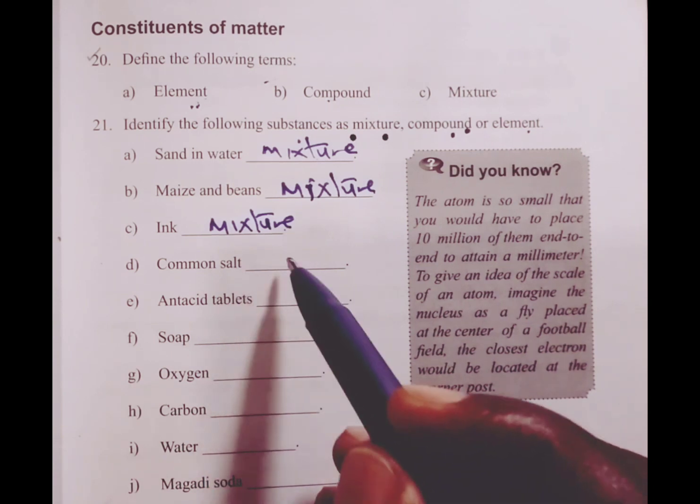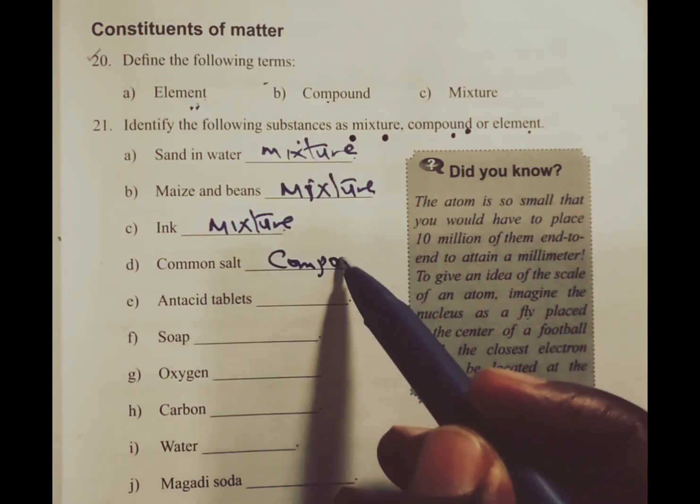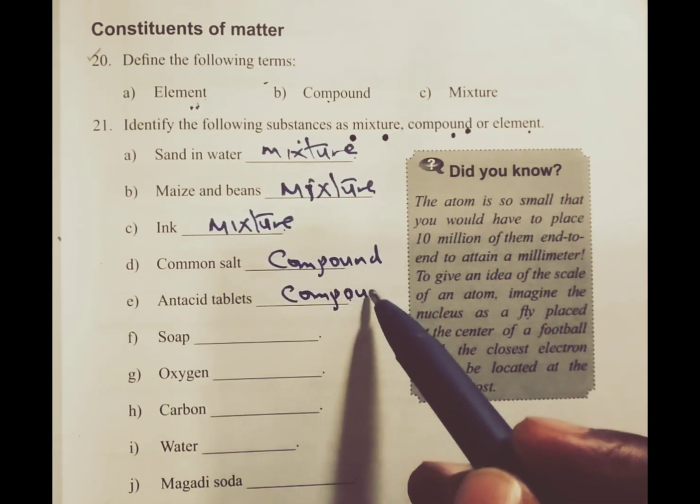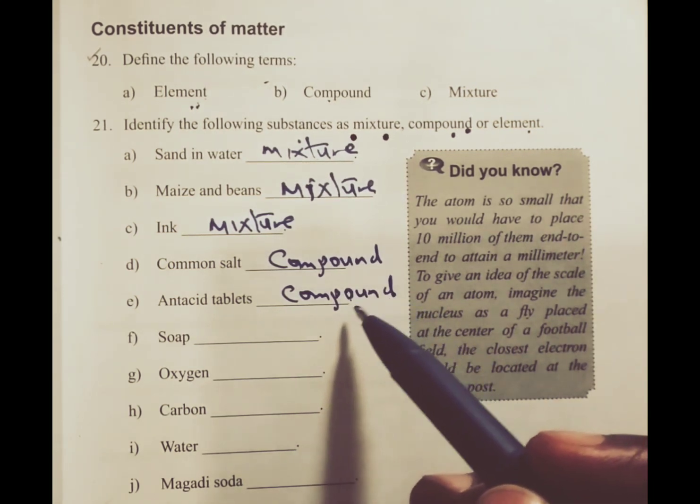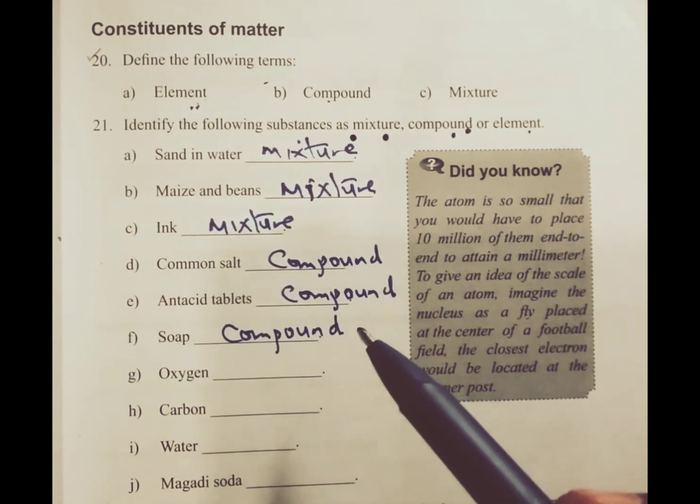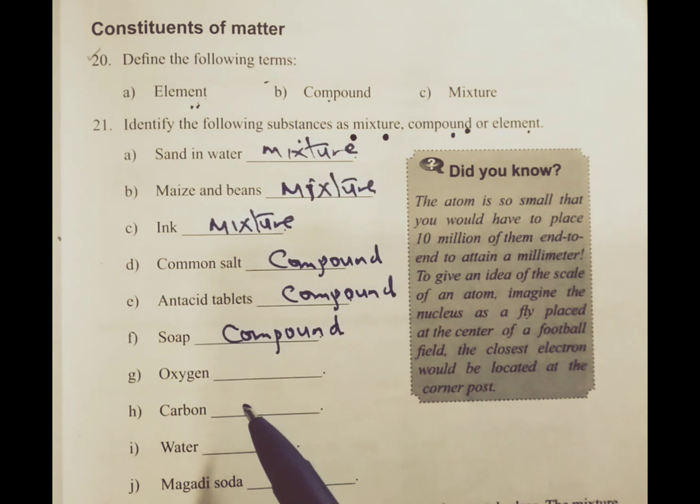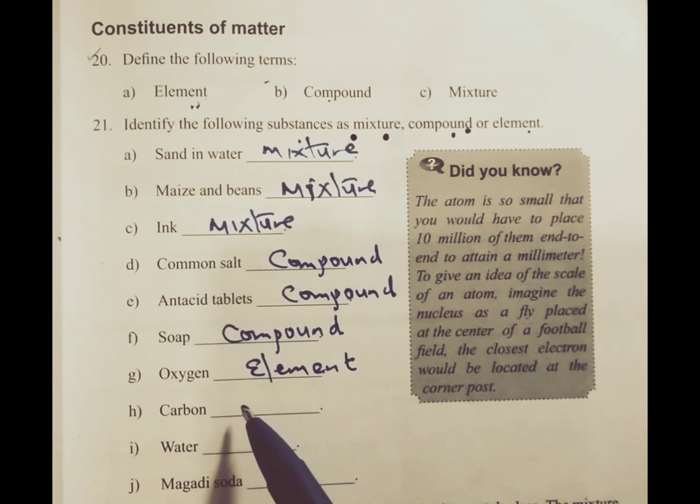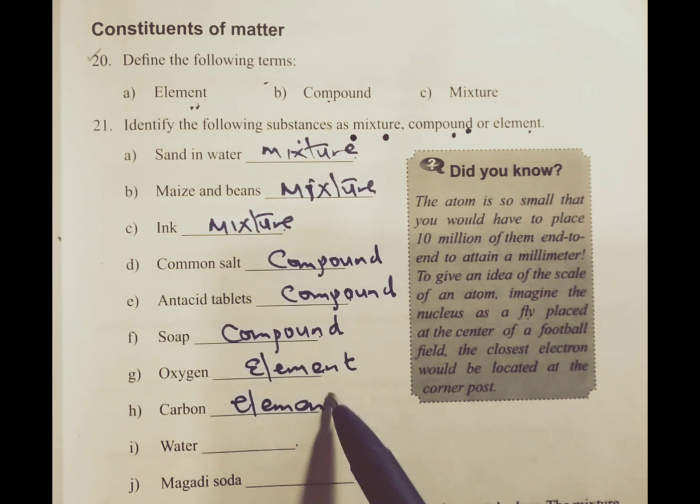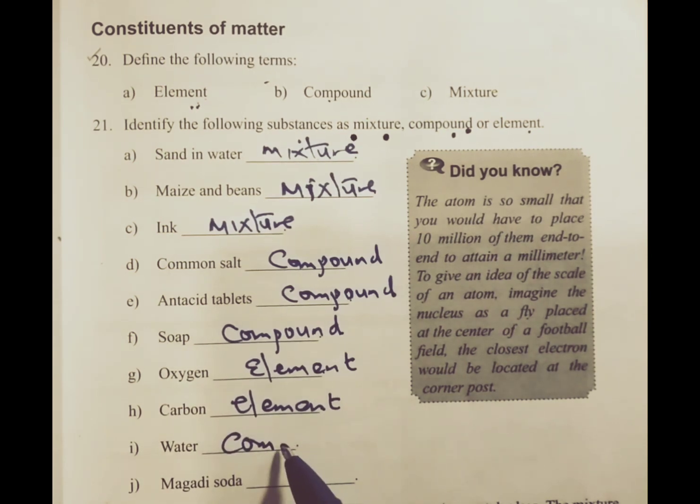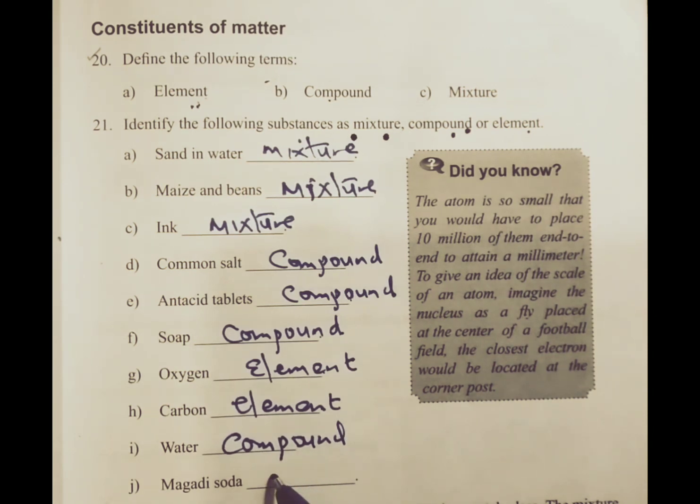We have antacid tablets. This is a compound. We have soap. Soap is a compound. Soap falls under the categories of detergents. We have oxygen. Oxygen is an element. We have carbon. Carbon is an element. We have water. Water is a compound. We have magadi soda, which is a mixture.